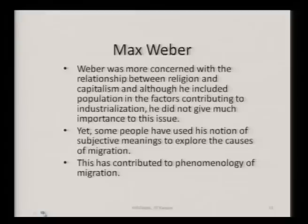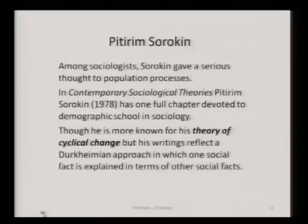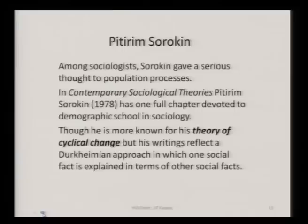Among sociologists, Sorokin gave a more serious thought to population processes. In his book Contemporary Sociological Theories, Sorokin has one full chapter devoted to the demographic school in sociology. Though he is more known for his theory of cyclical change, his writings reflect a Durkheimian approach in which one social fact is explained in terms of other social facts. Sorokin was actually more concerned with cultural or civilizational changes — large, fundamental changes in culture.